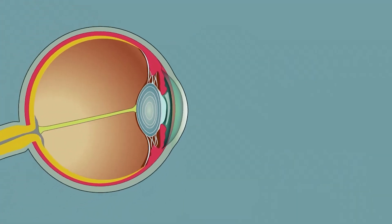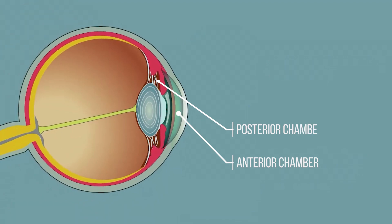Supporting this process are two fluid-filled chambers: the anterior chamber, located between the cornea and the lens, and the posterior chamber, or vitreous cavity, which fills the space between the lens and the retina. The aqueous humor fills the anterior chamber, maintaining intraocular pressure and providing nourishment, while the vitreous humor, a gel-like substance, helps to preserve the eye's shape and keeps the retina in close contact with the underlying tissue layers.